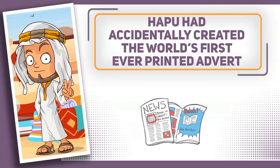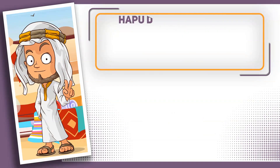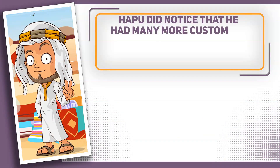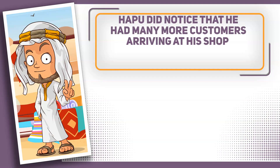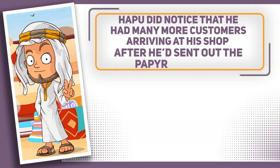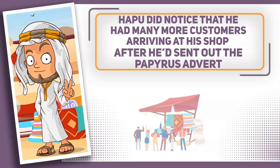But whatever happened to Shem, the escaped slave? You'll be pleased to hear that he was never captured, so the advert didn't actually achieve its original purpose. Nice one, Shem. But Hapu's accidental advertising campaign was a success — he noticed many more customers arriving at his shop after he sent out the papyrus advert. In other words, his advertising campaign was so effective that he expanded his business on the back of increased footfall.